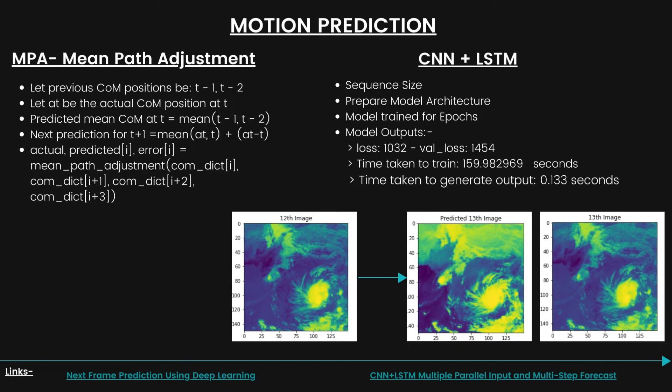Our model has been trained for 100 epochs. Comparing the two algorithms, we preferred CNN plus LSTM because this model is tuned with different hyperparameters to increase the accuracy.